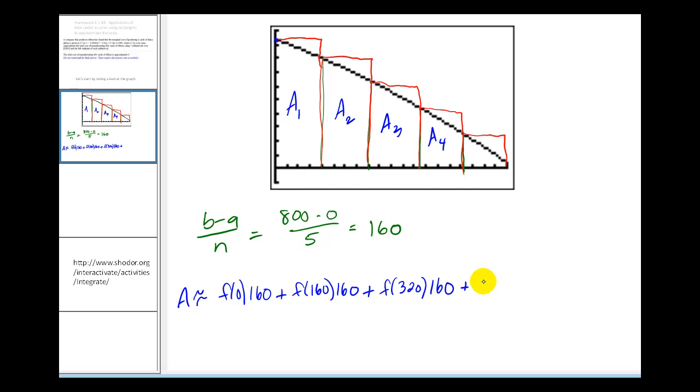Plus the last rectangle, this would be the height, this would be f of 480 plus another 160, that would give us 640, or f of 640, times another width of 160.